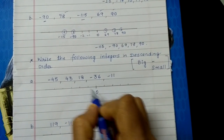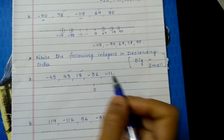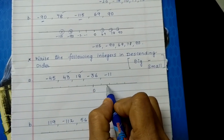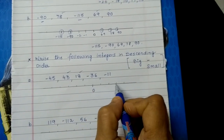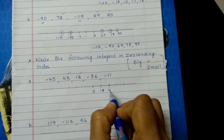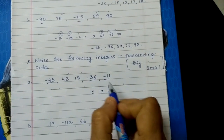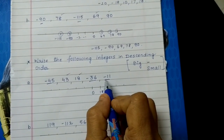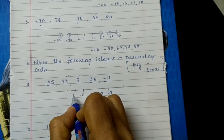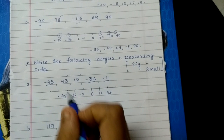Let us write the positive numbers and mark them on a number line. There are only two positive numbers: 18 and 43. So 18 will come first and then 43. Then the negative numbers — minus 11 will come first.